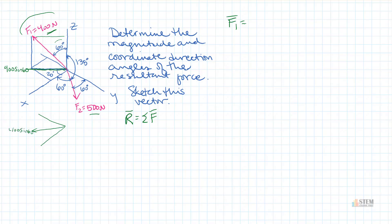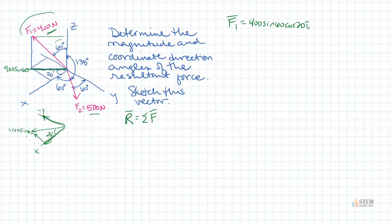This 400 sine 60 is going to be like our regular force magnitude in the 2D system, and now we've got 20 degrees — that's x and that's the negative y-axis. So for the x component, we do 400 sine 60 cosine 20, pointing in the positive x direction, so it's positive: 400 sine 60 cosine 20 i. For the y component, it's opposite that angle, so it will be 400 sine 60 sine 20 — and since this is the negative y-axis, this will be negative: minus 400 sine 60 sine 20 j.